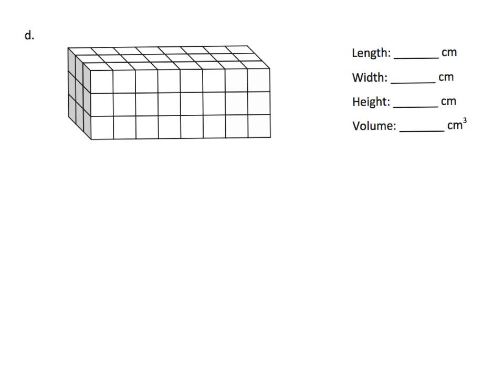Let's practice this. Here's another cool thing — you don't always have to think about the floors like a wedding cake going up and down. We could think of this like a loaf of bread and think about it as slices. So let's count the dimensions: the length is 8, the width right over here is 3, and the height is also 3.